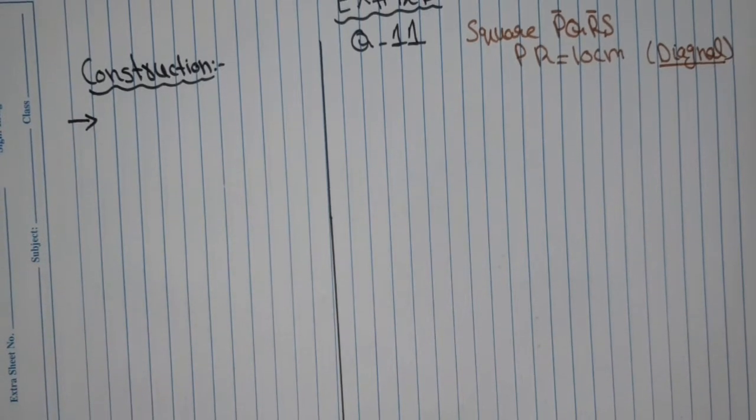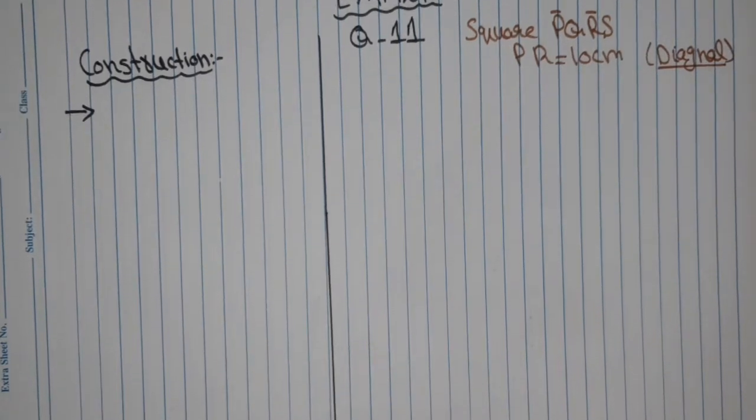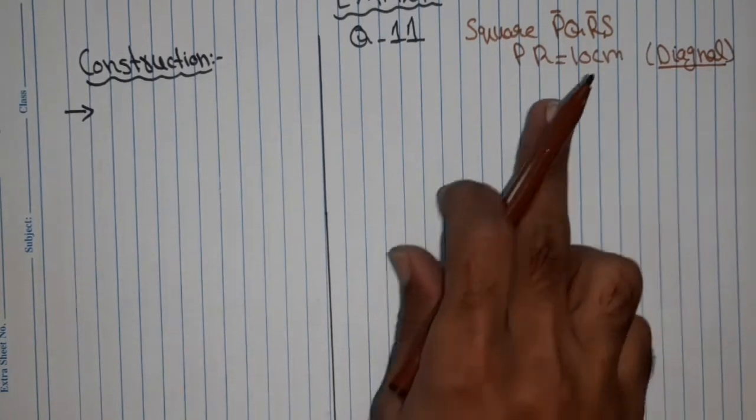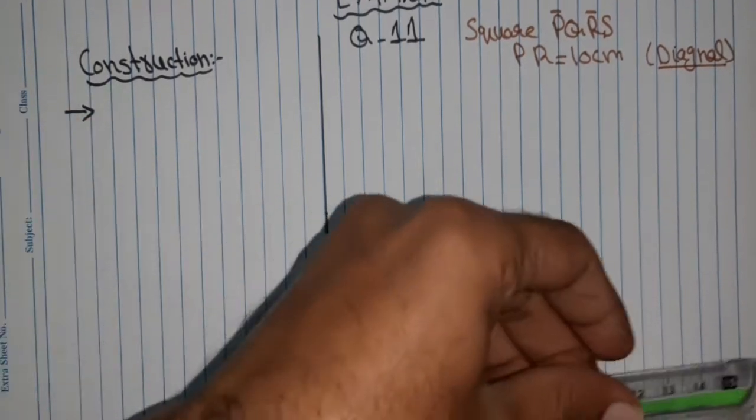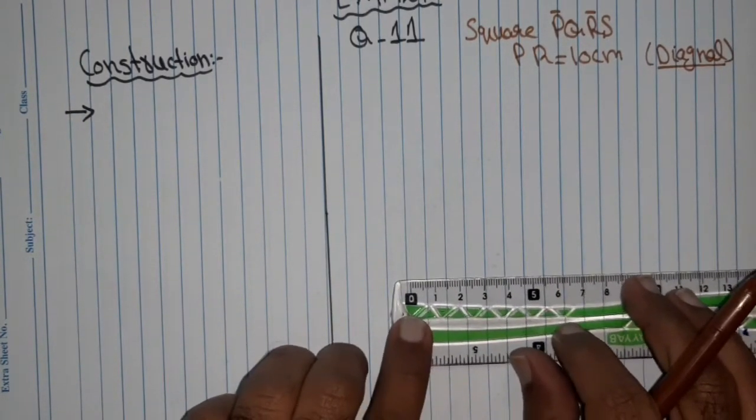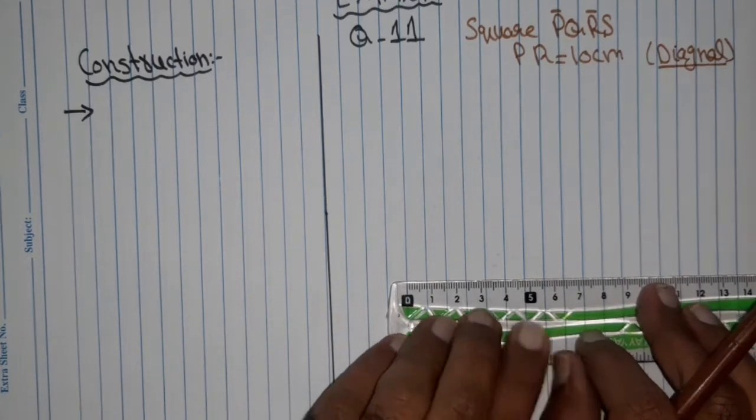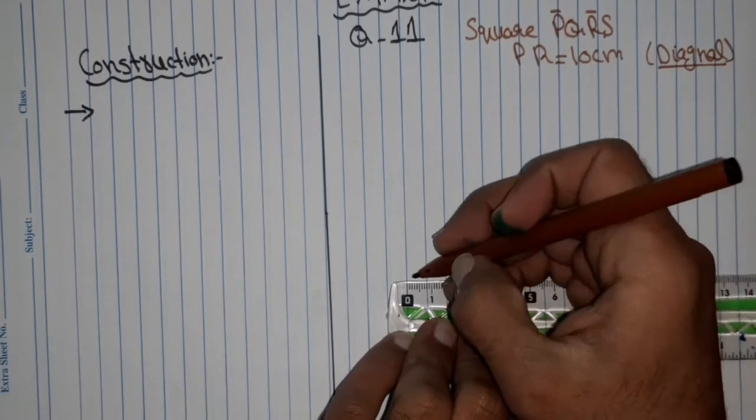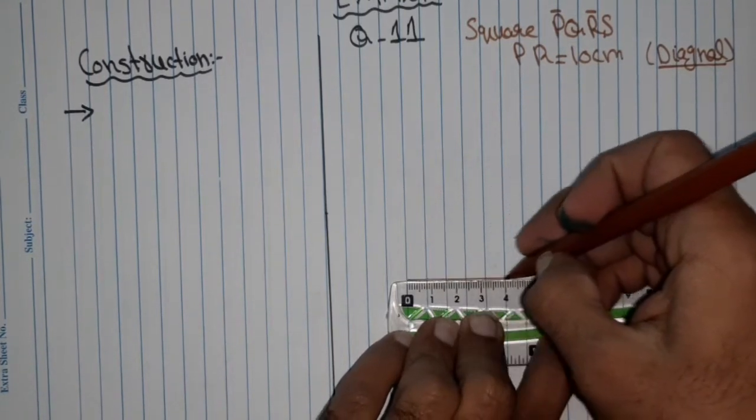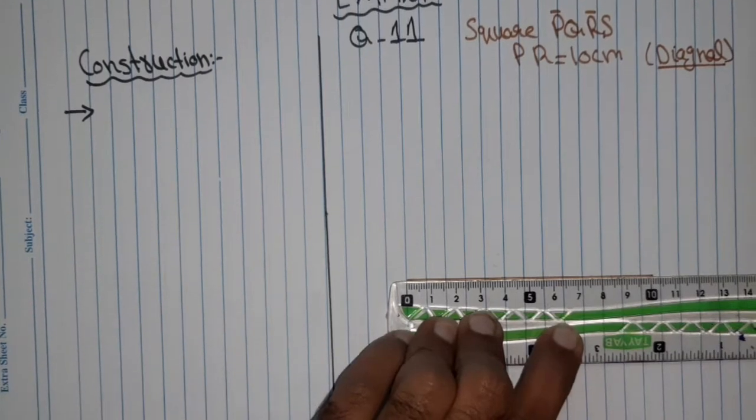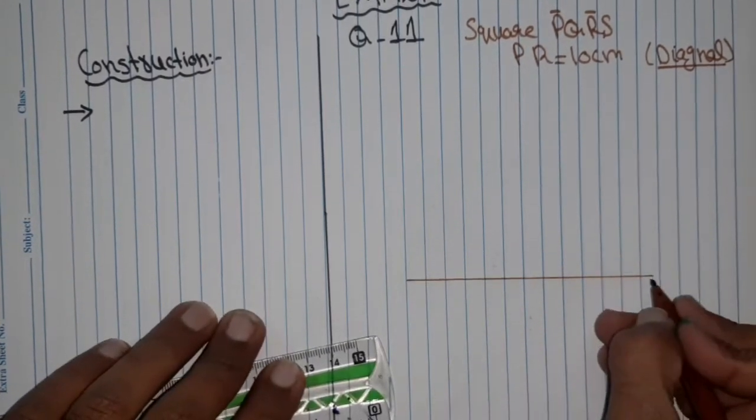In the question they have guided us on how to construct this square. First of all we will draw this line PR which is 10 cm. So this is line PR which is 10 cm.